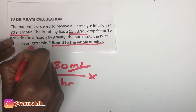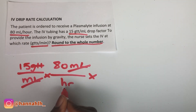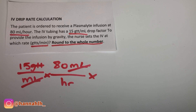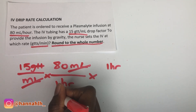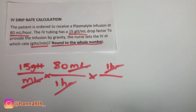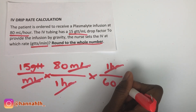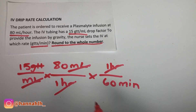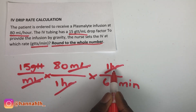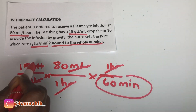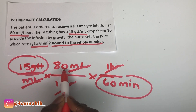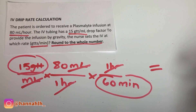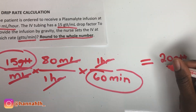Because the answer is drops per minute, we don't want hours — so how many minutes are in one hour? 60 minutes. We put one hour on top so it cancels, and 60 minutes on the bottom. The milliliters cancel out and the hours cancel out, leaving drops on top and minutes on the bottom. So 15 times 80 divided by 60 gives us 20 drops per minute.